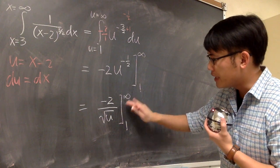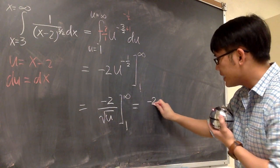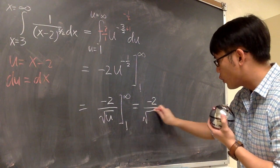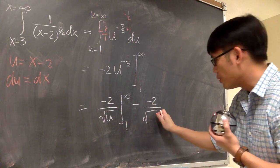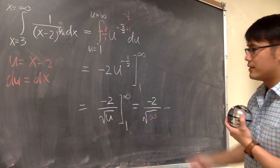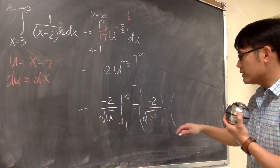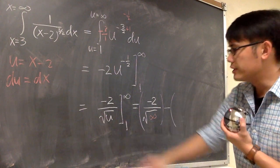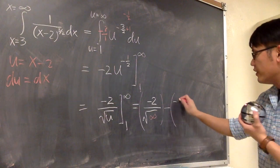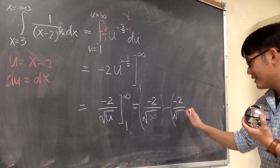Here is what's happening. First, I have to plug in infinity to u. The first part, I will get negative 2 over square root of infinity. Then we'll minus the second part. I plug in 1 to this u. So we'll have negative 2 on the top over square root of 1 for u.